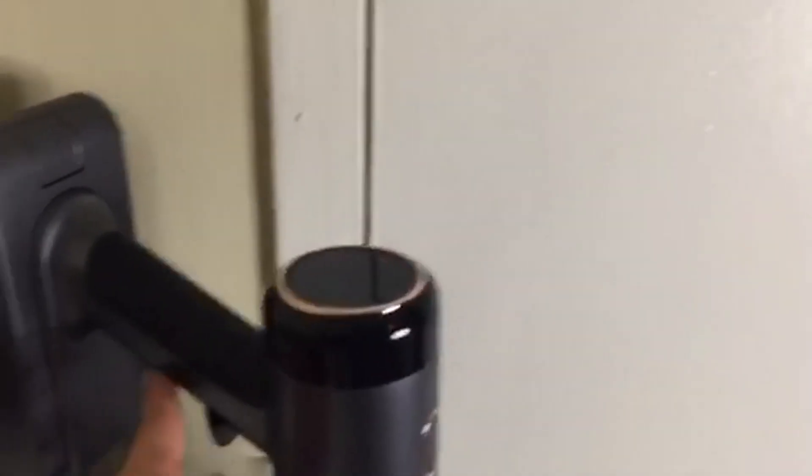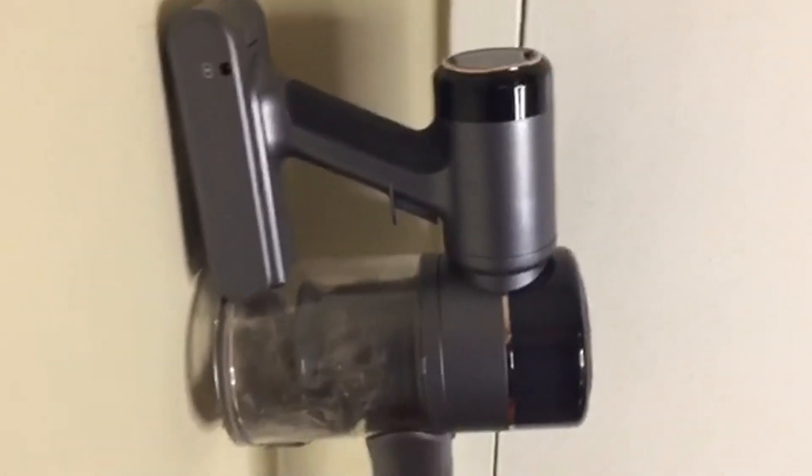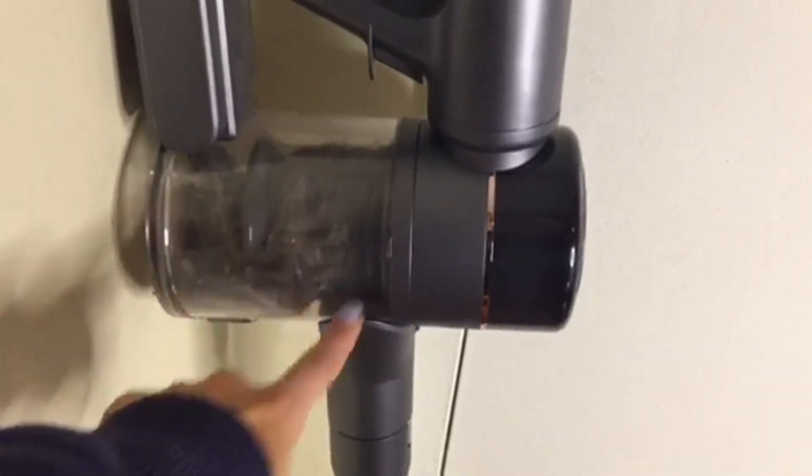Here's the top with the handle. This is the on-off button. And then up here, this changes how powerful you want the vacuum to be. This is the vacuum storage.